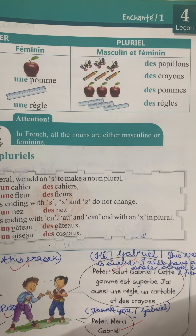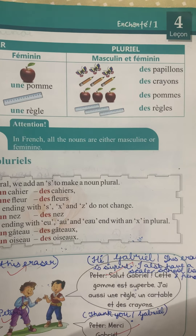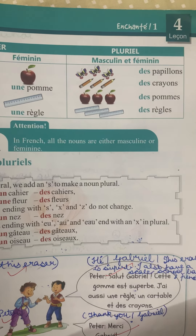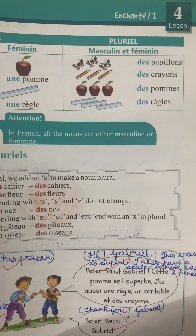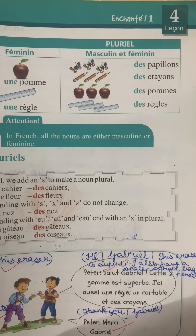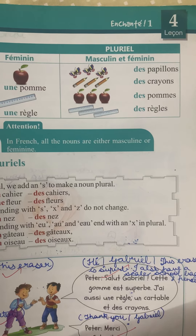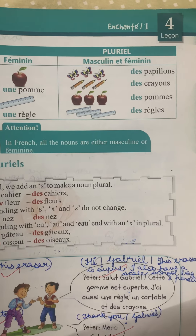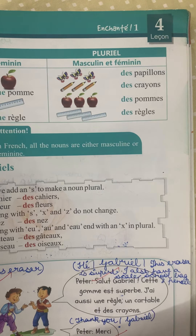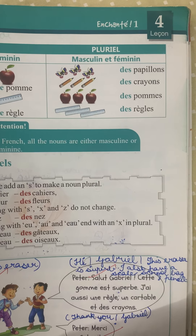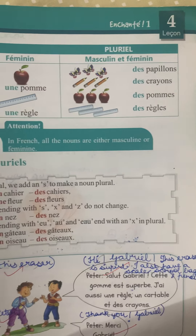Now if we have to make the plural, we need to add 's' at the end, and the indefinite article des will be placed. Butterflies: des papillons. Pencils: des crayons. Apples: des pommes. Scales: des règles.